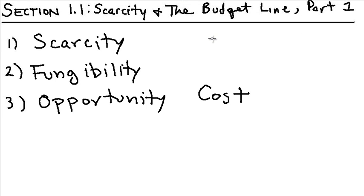In this lesson, we're going to be discussing section 1.1 of the McCloskey book, titled Scarcity and the Budget Line. We're only going to be covering about half of it, and the next half we'll cover in the next lesson. But all we're going to be talking about today are three fundamental economic concepts. These three concepts are going to come back again and again, so it's really important to get them down right now.